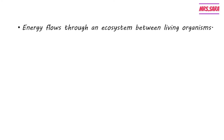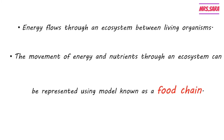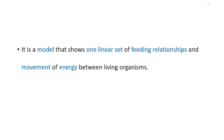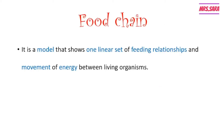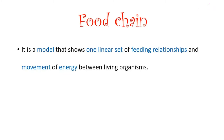Energy flows through an ecosystem between living organisms. The movement of energy and nutrients through an ecosystem can be represented using a model known as a food chain. A food chain is a model that shows one linear set of feeding relationships between different organisms and the movement of energy between living organisms.